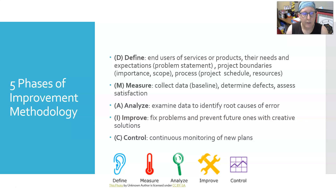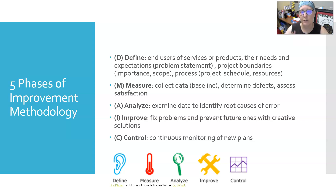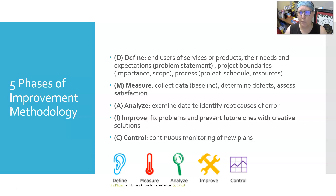There are five phases of the improvement methodology. The first phase is D for Define. You define the end users of the services or products in the lab — that could be patients, but it could also be the physicians that are ordering the test. What are their needs and expectations? From that you can get the problem statement, the project boundaries, the importance of the project, the scope — what it will do and what it won't do.